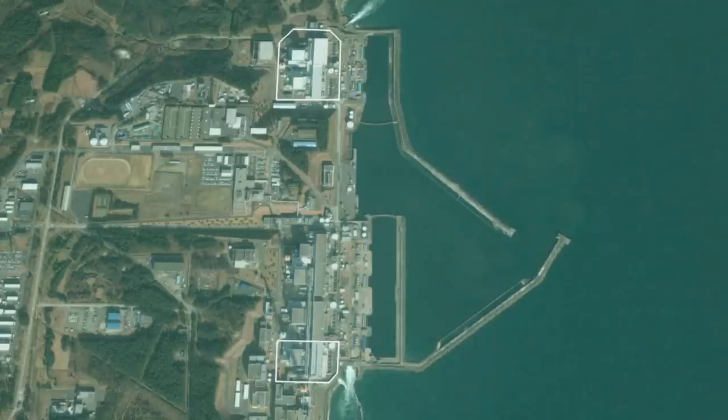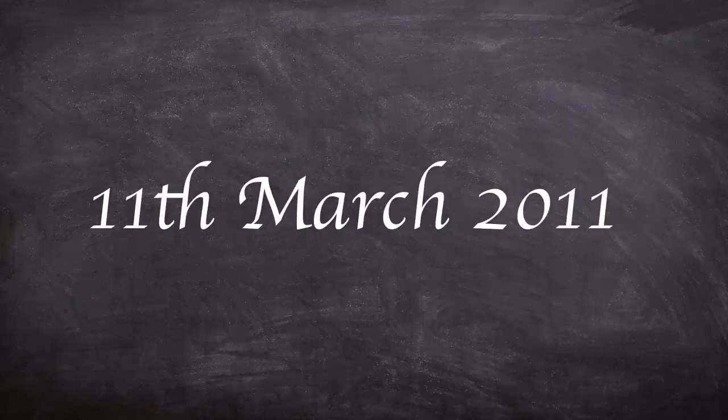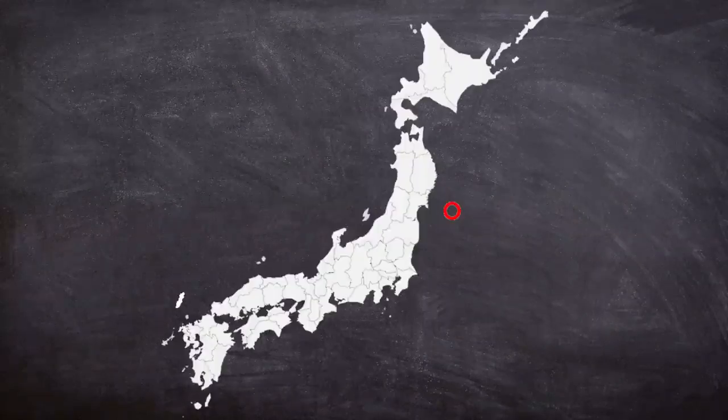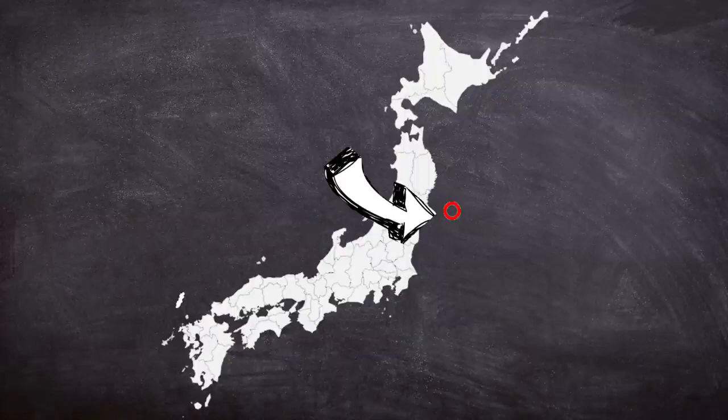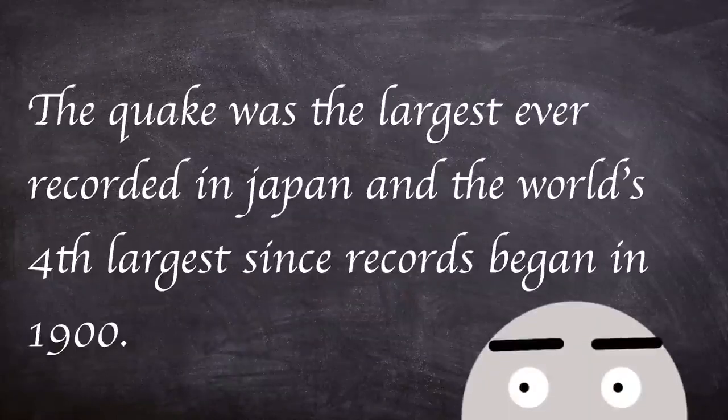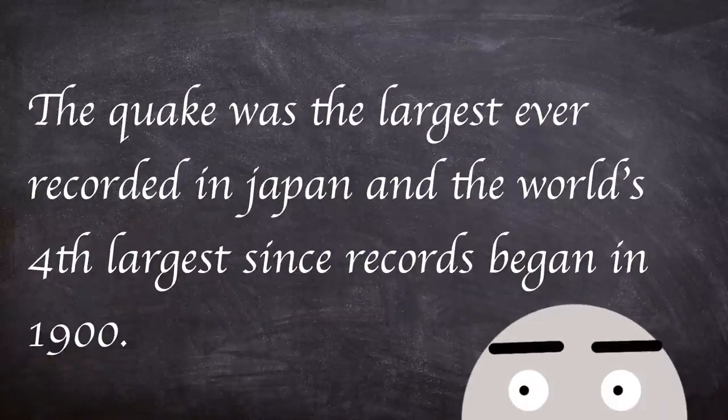On the 11th of March at 14:46 local time, an earthquake of magnitude 9 lasted for two minutes. It was caused by sudden energy release where the Pacific tectonic plate forces under the North American plate. The earthquake was the largest ever recorded in Japan and the world's fourth largest since records began in 1900.